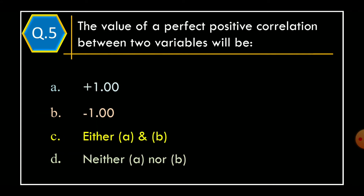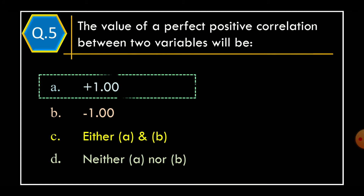Question 5. The value of a perfect positive correlation between two variables will be: Option A, plus 1.00; Option B, minus 1.00; Option C, either Option A and B; Option D, neither Option A nor Option B. The correct option is Option A, plus 1.00.